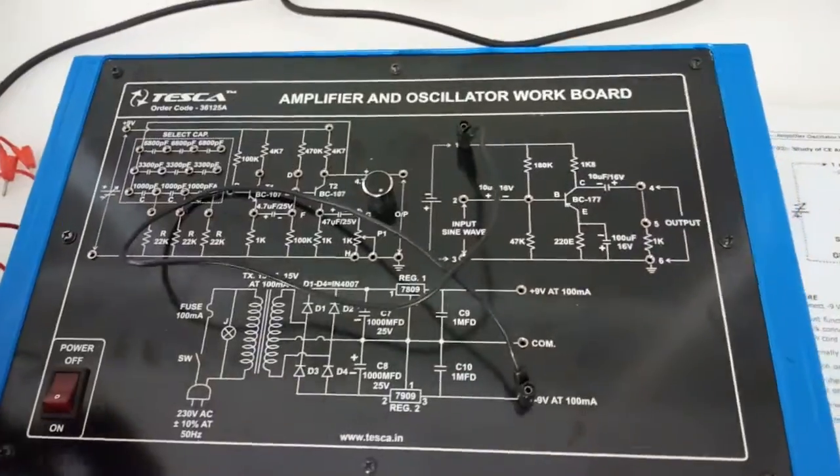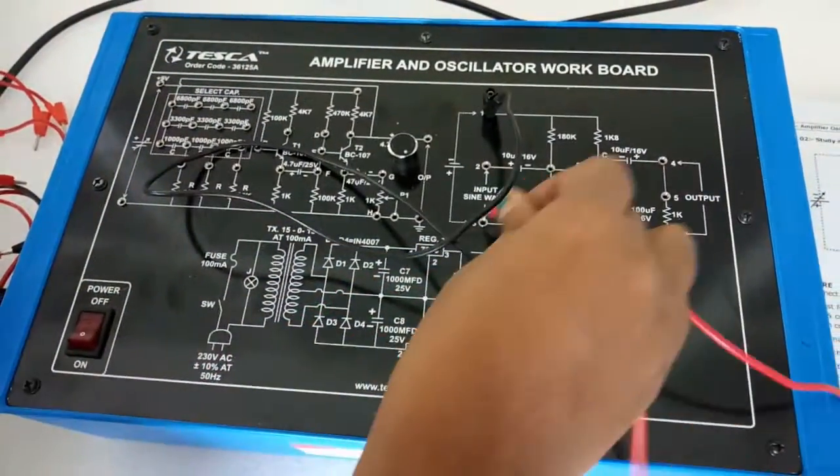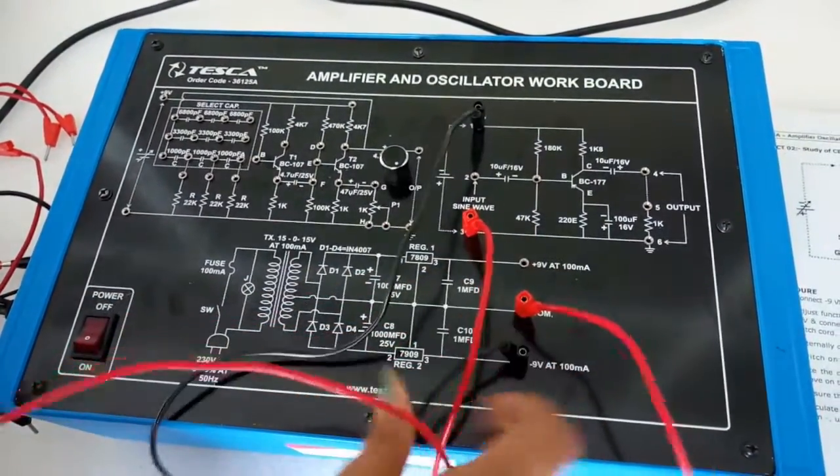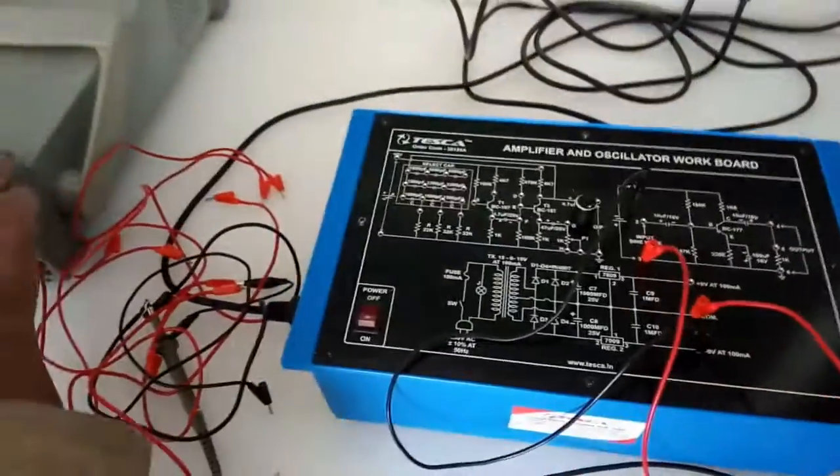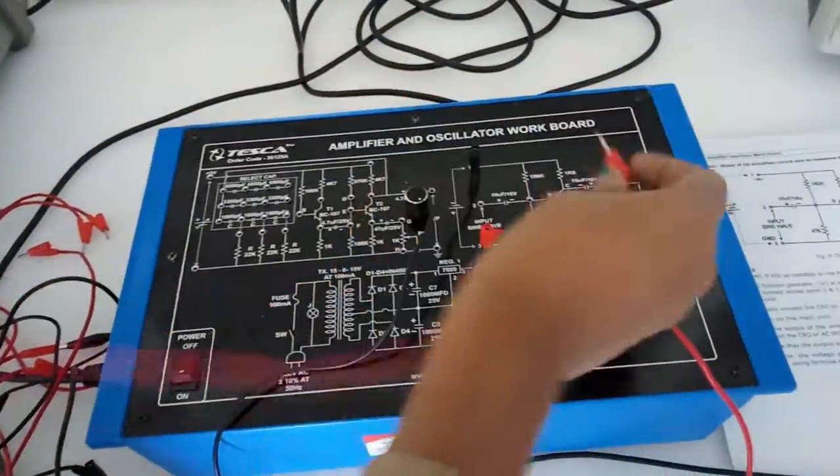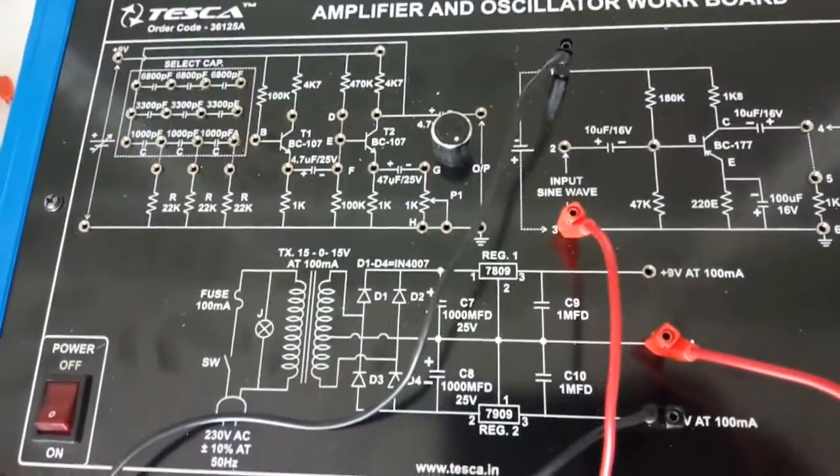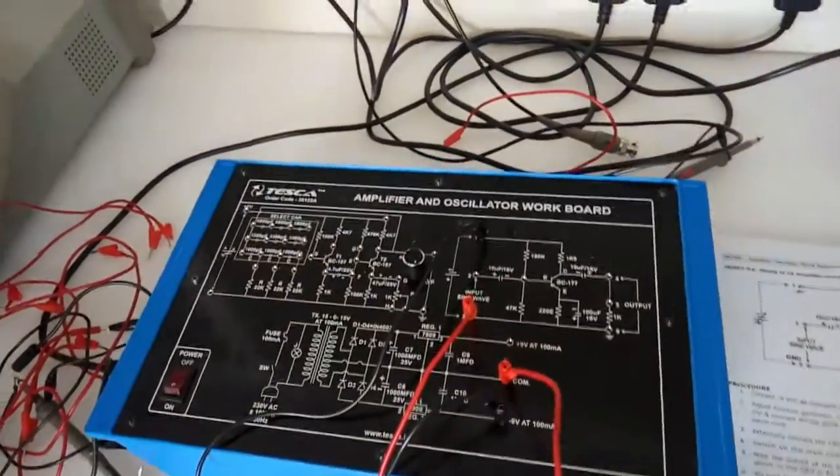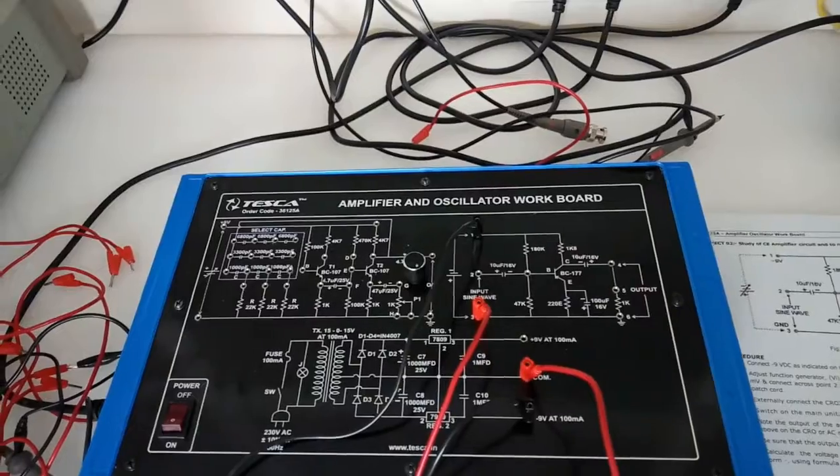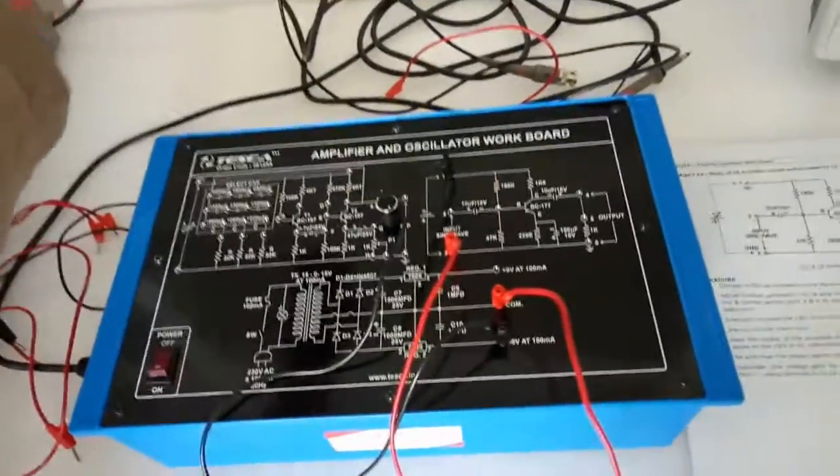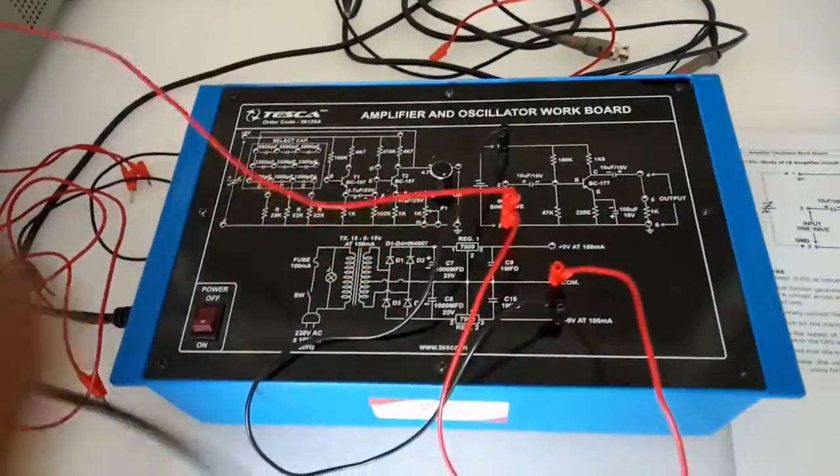From the frequency generator, we will give a 1 kilohertz sine wave at terminals 2 and 3. We are giving a 1 kilohertz sine wave to terminals 2 and 3.